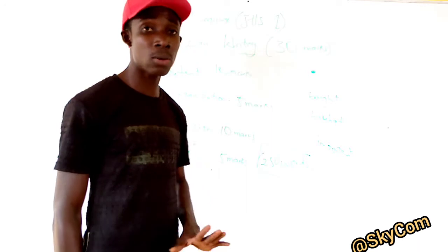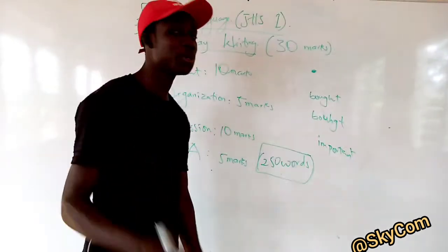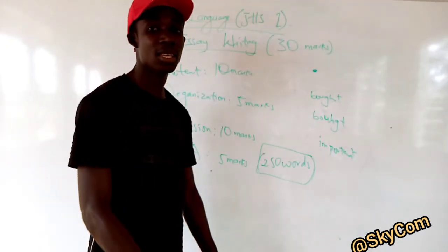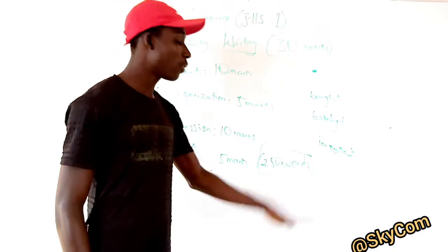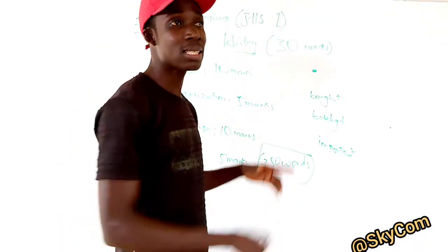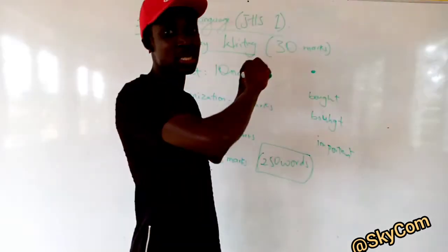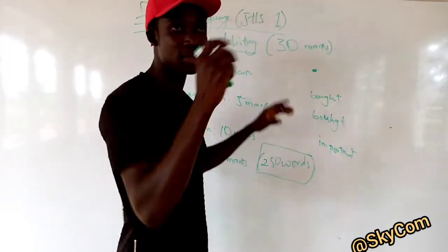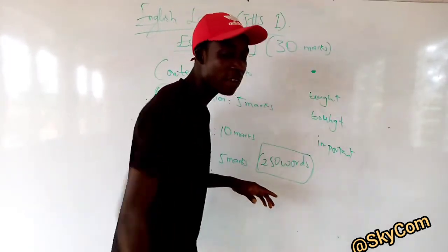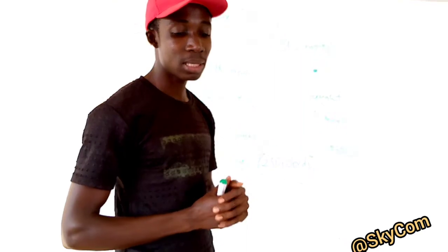I've taught you how to count words — not count one, two, three, four, five individually because you're not going to finish. Just count the number of words on the first line and multiply by the number of lines that you've written. And that's all.